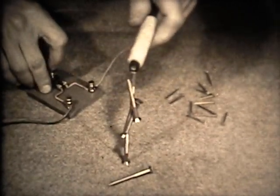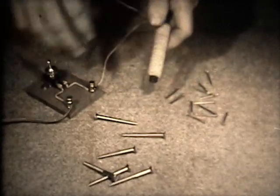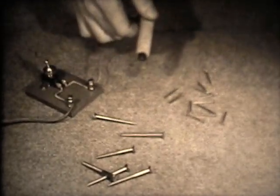But when the current is switched off, the coil loses its magnetic force. It is the electric current flowing through the wire which gives the coil this force.